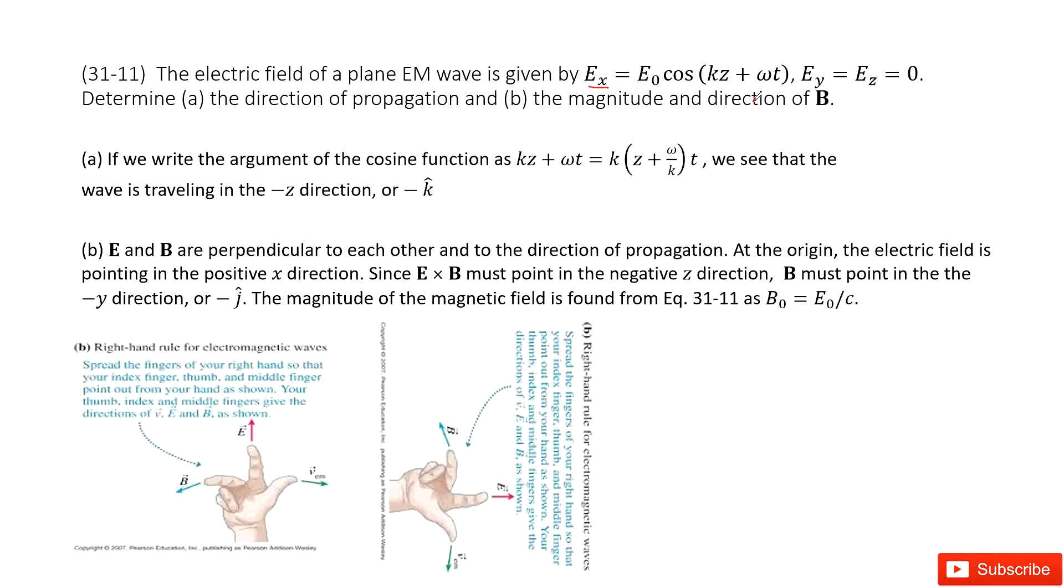We know EM waves travel following the right-hand rule. You can see in this way you have the electric field. If you point up B, the magnetic field is pointing out. And this is how the EM wave propagates.